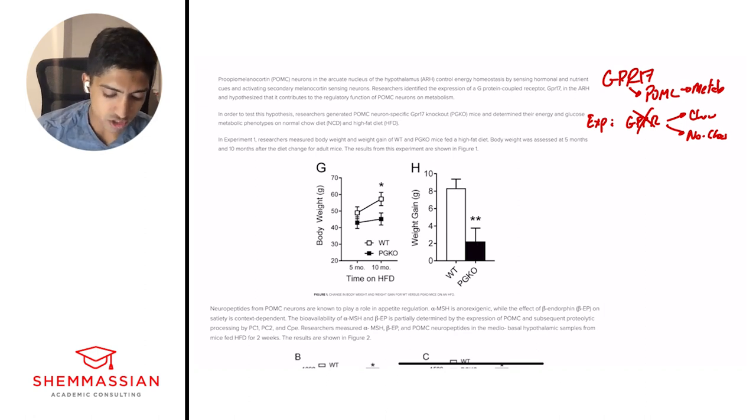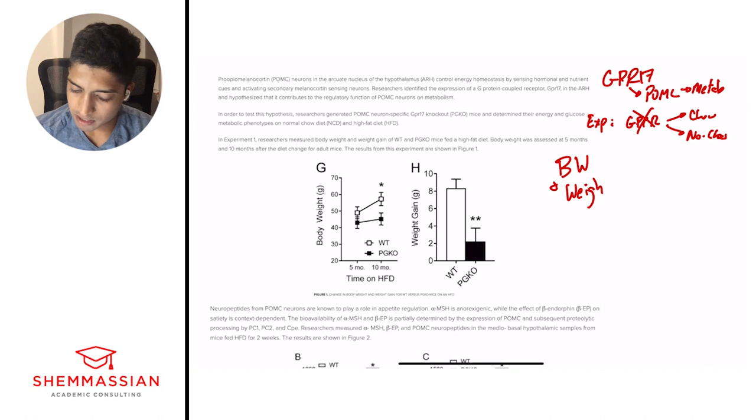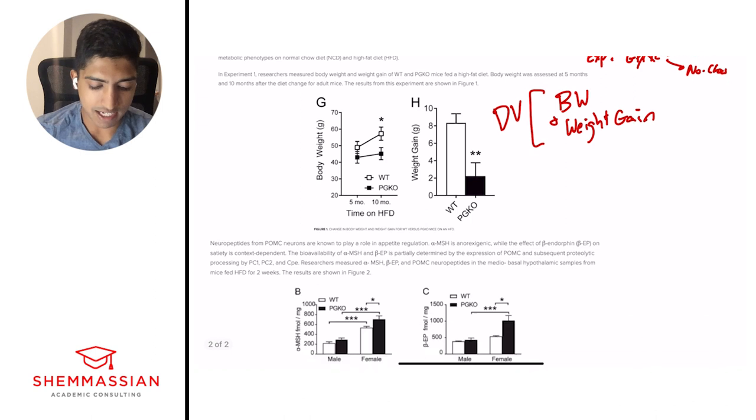Now we'll go on to the next. In experiment one, researchers measured body weight and weight gain of WT and PGKO mice fed a high fat diet. Body weight was assessed at five months and ten months after the diet changed for adult mice. The results from this experiment are shown in figure one. And then it shows us a figure. So I like to think of what is the big picture understanding? What is being changed and what's being looked at? So here, all I'm going to say is body weight and weight gain. And these are our dependent variables. This is what we're looking at. So that's the main thing takeaway from this paragraph. And like I said, I'm not spending too much time on the figure because I don't know if questions are going to be asked.